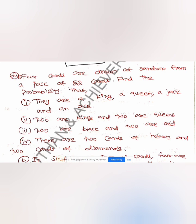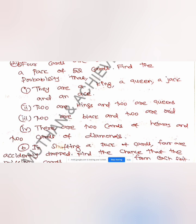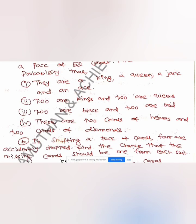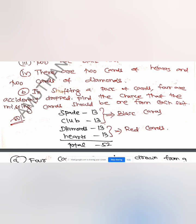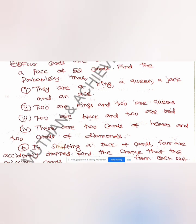The second problem: 4 cards are drawn at random from a pack of 52 cards. Find the probability that: they are a king, queen, jack and an ace; two are kings and two are queens; two are black and two are red; there are two cards of hearts and two cards of diamonds. In a pack of cards there are 52 cards — 26 red and 26 black, with four suits of 13 cards each: spades, clubs, hearts and diamonds.